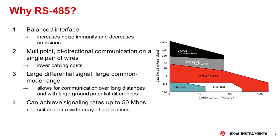RS-485 supports multipoint bidirectional communication across two wires, which can help lower cable costs. An RS-485 driver is required to drive a large differential signal into an RS-485 load. This enables the signal to travel across long distances while still being large enough to be accurately interpreted by the receiver. An RS-485 driver and receiver are also required to operate over a common mode range of negative 7 volts to 12 volts. This enables data fidelity in the presence of large ground potential shifts relative to other interface standards and may also extend the operable distance of an RS-485 transmission line.